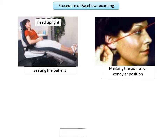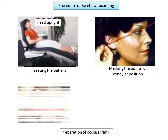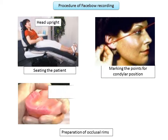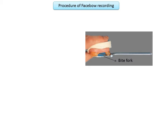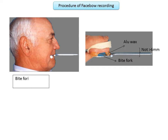If using a fascia type facebow, mark Behrens' point on this line, where the condylar rods will be positioned. Next, prepare the occlusal rims: in a complete denture patient, a notch of about 2 millimeters in depth is made in the region of the first molar to help hold the facebow in position. The mandibular occlusal rim is reduced to make space for the bite registration material. Then prepare the bite fork by applying the bite registration material — Aluwax is softened and shaped into a horseshoe and placed on the bite fork.